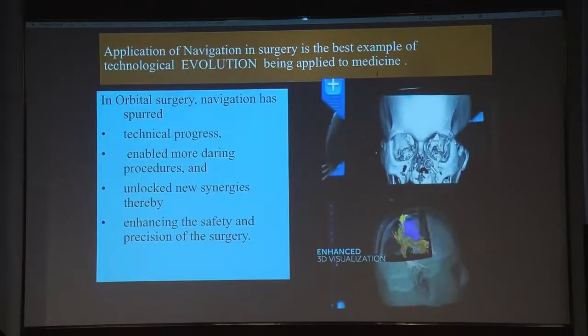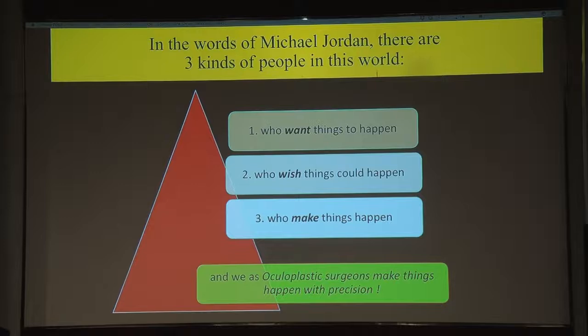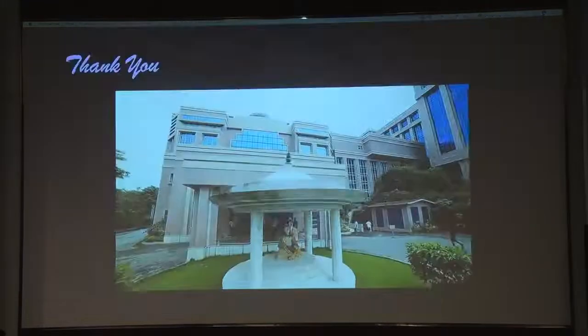To conclude, I quote Michael Jordan: there are three kinds of people — those who want things to happen, those who wish things to happen, and those who make things happen. As senior oculoplastic surgeons, we should make things happen — with precision. Thank you for your patience. I have been heading the department of oculoplastic and reconstructive surgery at my institute for 20 years and am happy to take any questions.